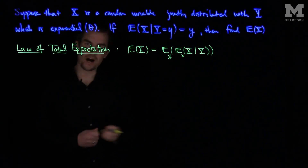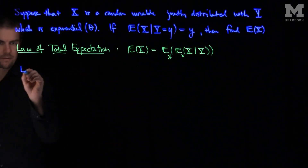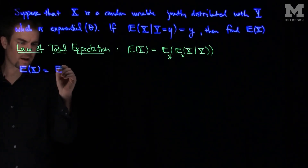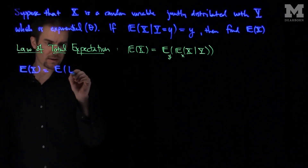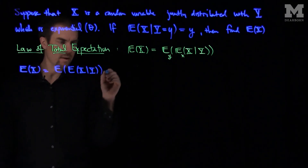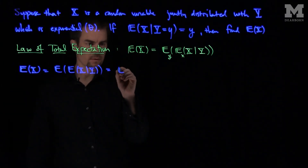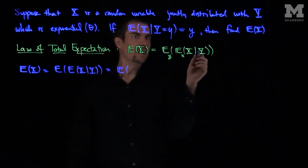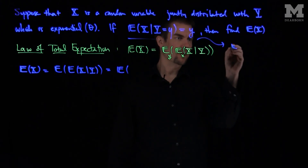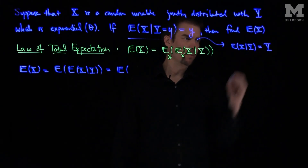For our problem, the expected value of x will be the expected value of the expected value of x given the random variable y. We're given that the expected value of x given y equals little y, so in random variable language the expected value of x given the random variable y is exactly just the random variable y.